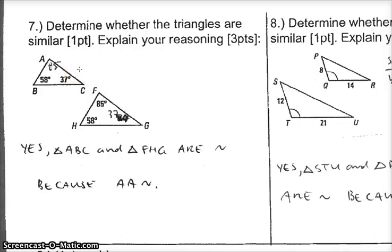It should be very clear for question number seven. Notice how there's no side lengths. There's no numbers on the outside of the triangle. So I can't use SAS. I can't use SSS.